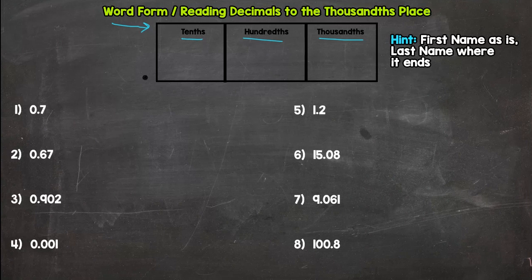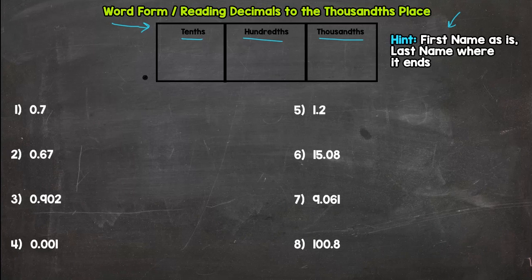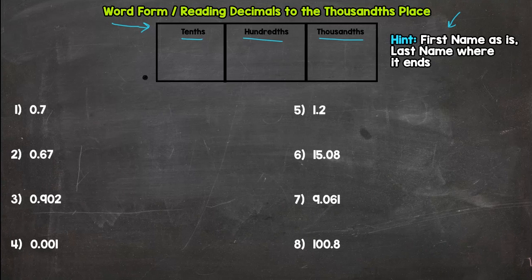I have a hint over here that's going to help us out today. It might not make sense at first, but trust me — by the end of this video you will be much better at this. The hint is: first name as is, last name where it ends.